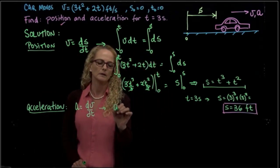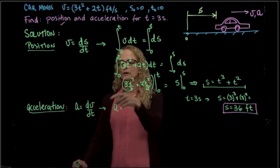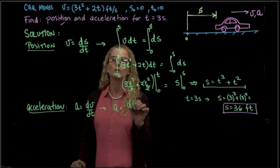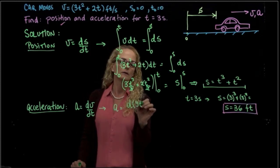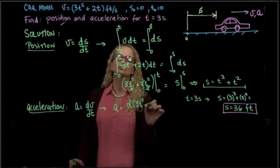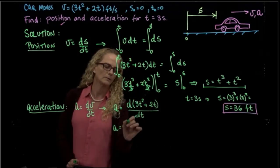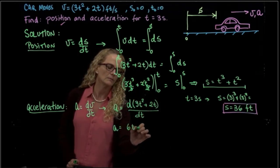Instead of integrating, we derive this expression. So we have the derivative of 3t squared plus 2t over time. That will be 6t plus 2.